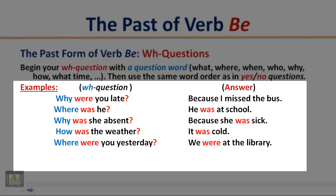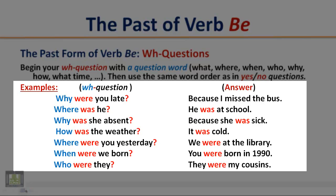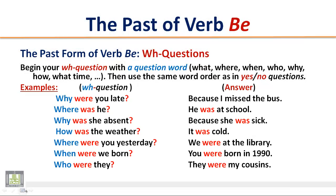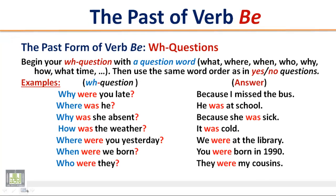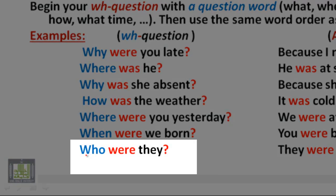Where were you yesterday? We were at the library. When were we born? You were born in 1990. Who were they? They were my cousins. Pay attention to the word order in WH questions: begin the WH question with a question word, followed by verb B, followed by the subject.